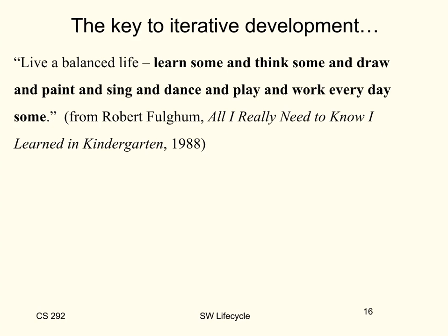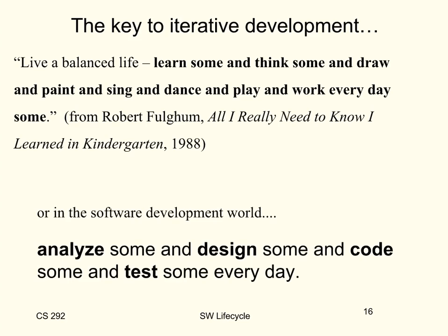The key to iterative development comes from Fulghum's book from the late 1980s — All I Really Need to Know I Learned in Kindergarten — which is: live a balanced life, learn some and think some and draw and paint and sing and dance and play and work every day some. Or, if you're a software developer: analyze some and design some and code some and test some every day. And that's how you end up with code. That's it for now; next video will come up shortly. Thanks a lot, take care.